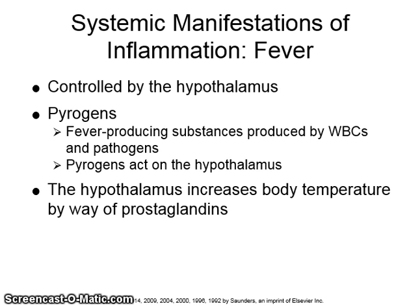Pyrogens are fever-producing substances produced by white blood cells and pathogens. Pyrogens act on the hypothalamus. The hypothalamus increases body temperature by way of prostaglandins.